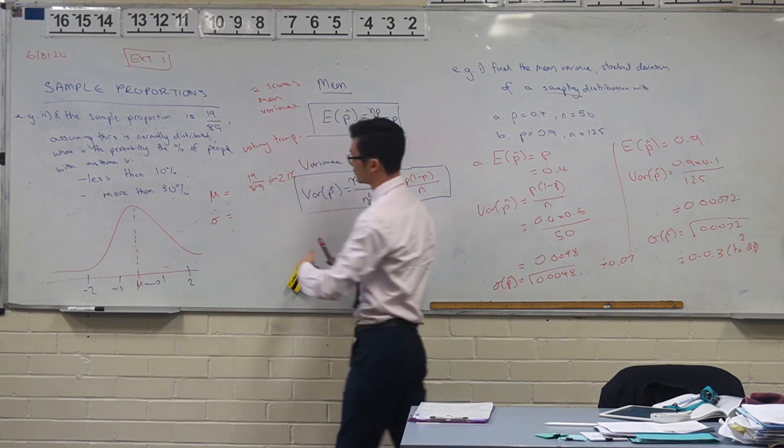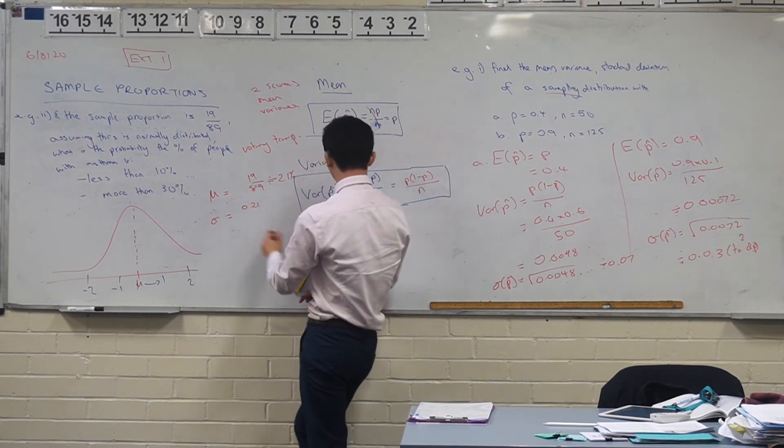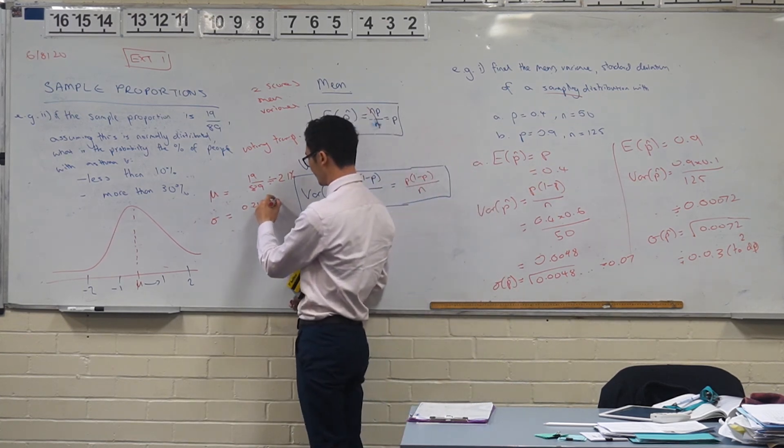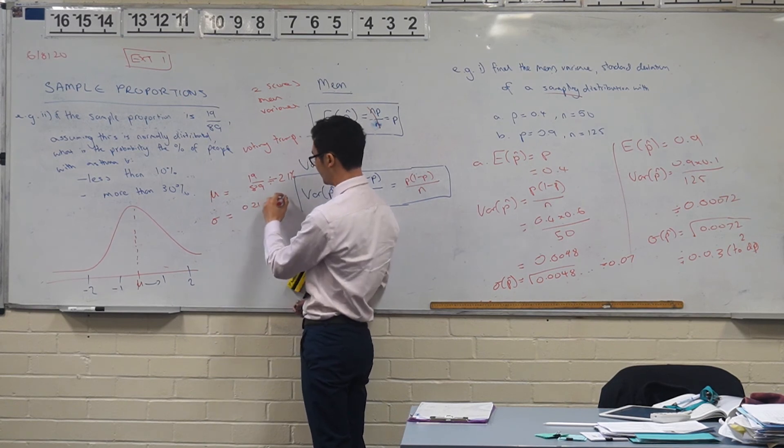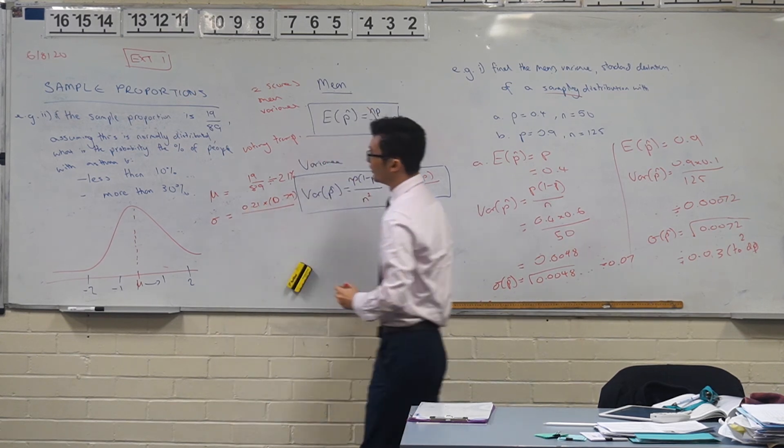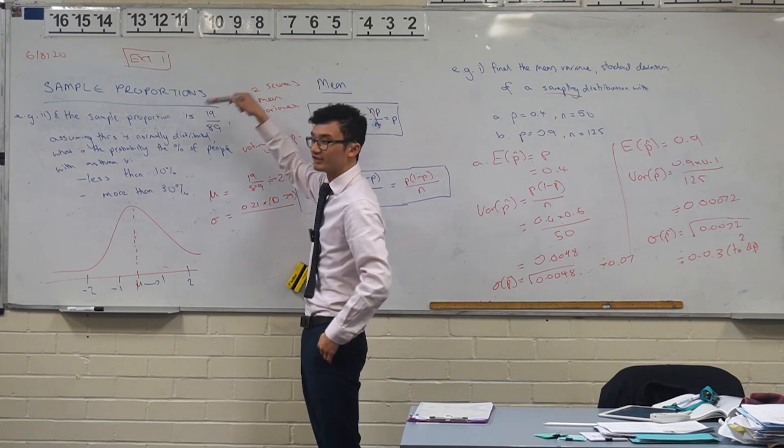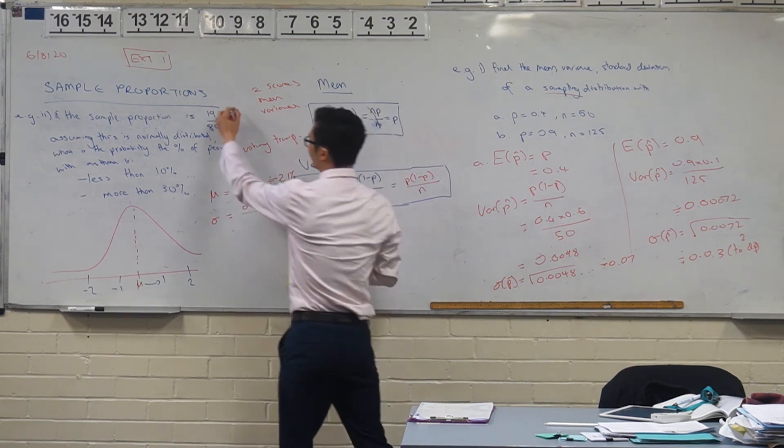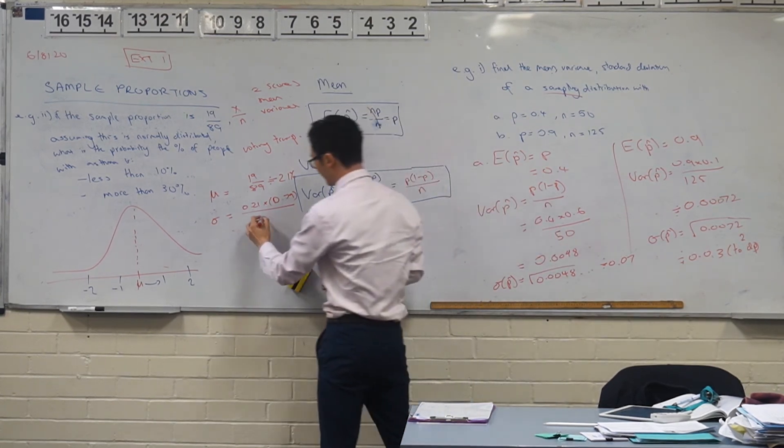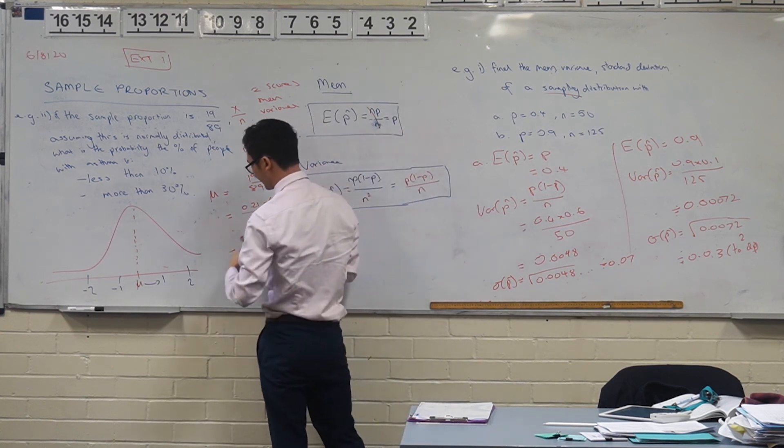So we have our p-value, so our probability of success, which is, we're saying is 21%. So 0.21 multiplied by 1 minus p, so 0.89? No, 79? Yep. Divided by the number of samples that we're taking. In this case, the sample proportion is 19 on 89, which we know is x divided by n. So 89 is the number of samples that we were taking here. So 89 over here. So this is going to be our variance actually.